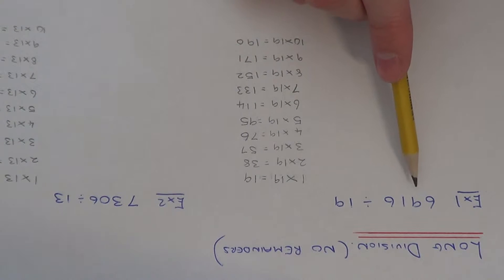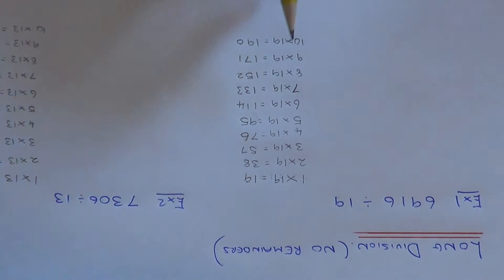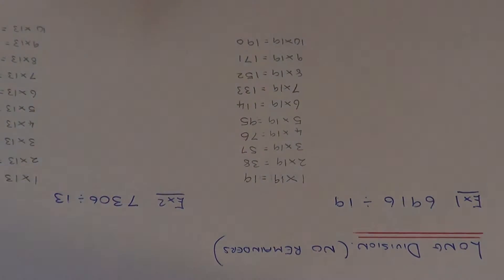So we've got to work out 6916 divided by 19. Now what I've done first of all, I've just written down my first 10 multiples of 19. If you do this, this will save you time later on when you're doing your question. So you don't have to keep working out the multiples of 19. So it's worth spending a couple of minutes working those out.